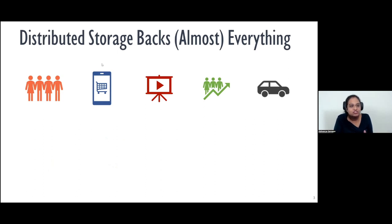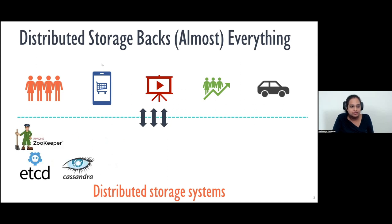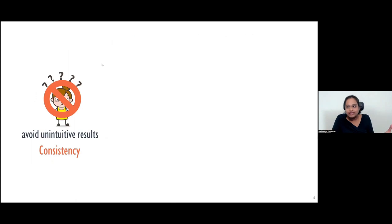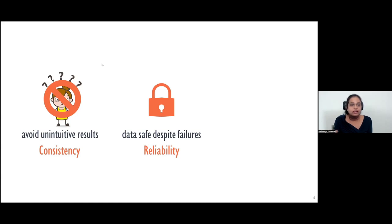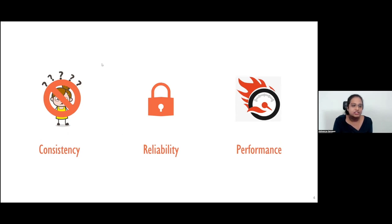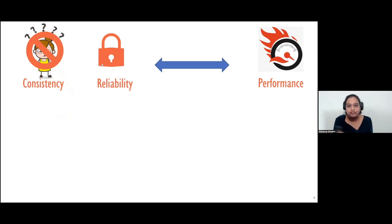Most if not all of these applications store their data on distributed storage systems, which form the core of all services running in today's data centers. These systems must meet some important goals. First, the storage system must present a meaningful view of the data it stores — that is, it must provide strong consistency guarantees. Second, applications expect the storage system to keep data safe even in the presence of hardware or software failures. Finally, the storage system must provide efficient access to data. Unfortunately, the goals relating to consistency and reliability are often at odds with performance.